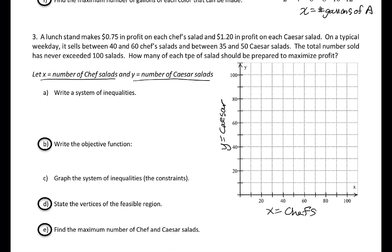Write a system of inequalities — let's collect the similar units. The dollar amounts are used in the objective function, since that's what we're trying to maximize. Looking at the other information: it sells between 40 and 60 chef's salads. Chef's salads is x, so x has to be between 40 and 60. That's our chef's salad inequality — it's not a y = mx + b, just a total number constraint.